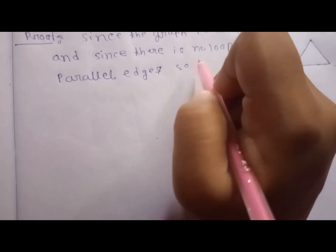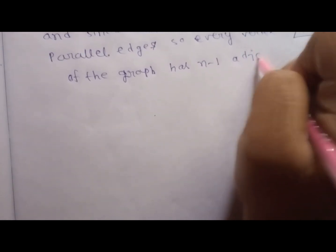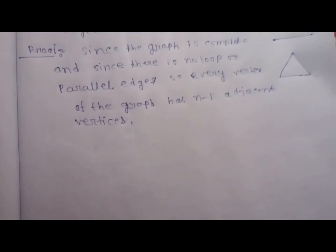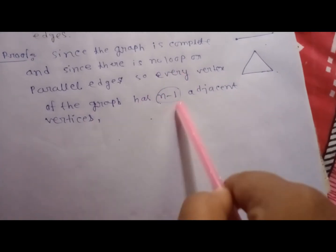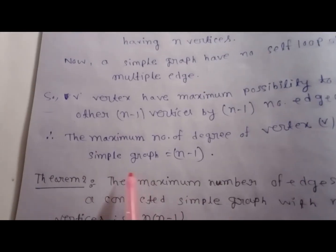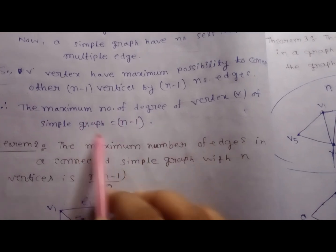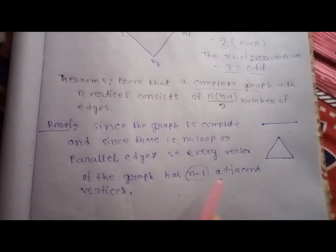Every vertex of the graph has n minus 1 adjacent vertices. The term n minus 1 we see from theorem 1. We proved that the maximum degree of vertex v of a simple graph is equal to n minus 1. From theorem 1 we conclude that there are n minus 1 adjacent vertices.